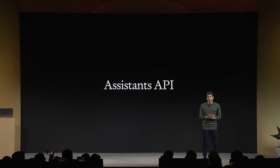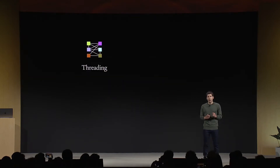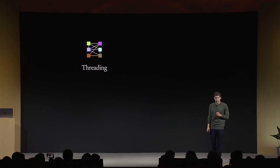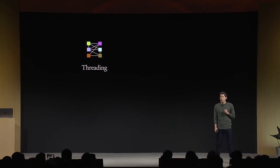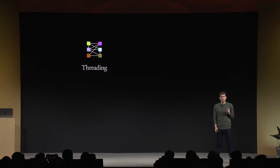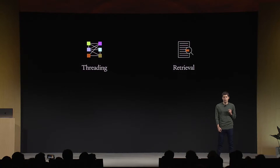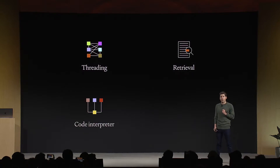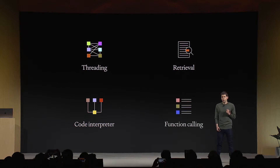So today, we're making that a lot easier with our new Assistants API. The Assistants API includes persistent threads, so developers don't have to figure out how to deal with long conversation history, built-in retrieval, code interpreter — a working Python interpreter in a sandbox environment — and of course, the improved function calling that we talked about earlier.